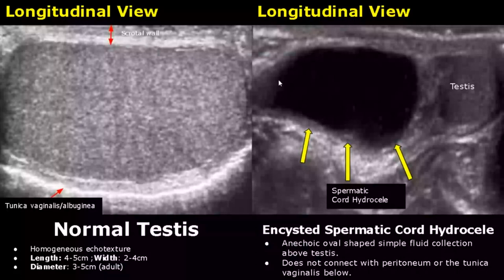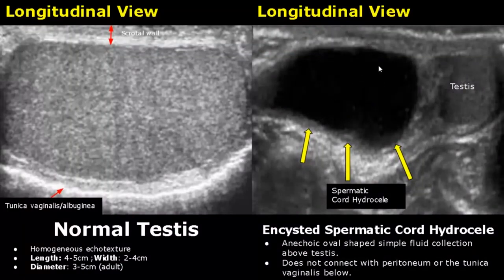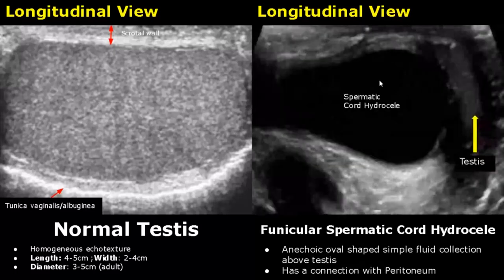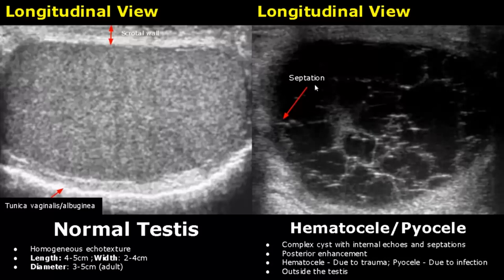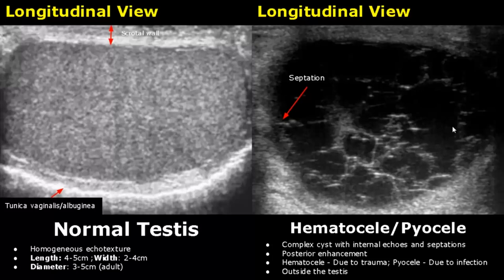Encystic spermatic cord hydrocele is a fluid collection above the testis. This fluid collection will not surround the testis and won't connect with the peritoneum above. It is usually anechoic and oval shaped. The funicular spermatic cord hydrocele will communicate with the peritoneum — it is open, creating a connection. A hematocele and a pyocele have similar appearances: a complex cyst outside the testis with internal echoes and septations, and posterior enhancement. A hematocele contains blood due to trauma; a pyocele consists of pus due to infection.